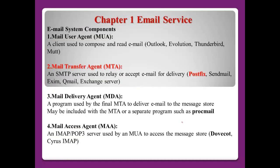Chapter one covers email service. In a previous video about setting up a mail server using Sendmail, I already explained this, so here I'll summarize. First: MUA — mail user agent — like Outlook and Evolution. There are many MUAs we can use. Number two: MTA — mail transfer agent — we call this the SMTP server, normally used to relay or accept email for delivery. Examples include Postfix, Sendmail, Exim, qmail, and Exchange Server.